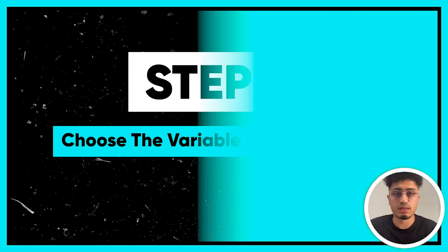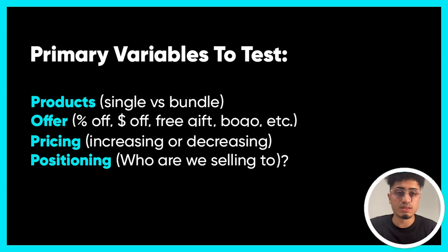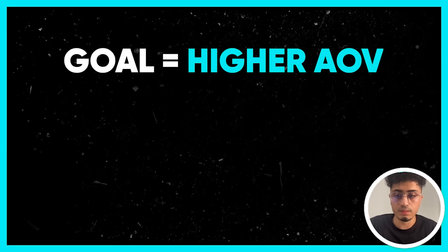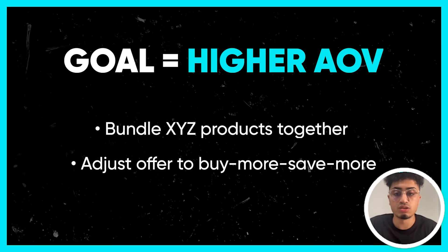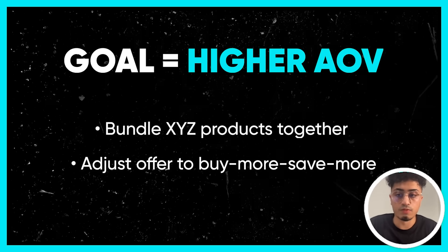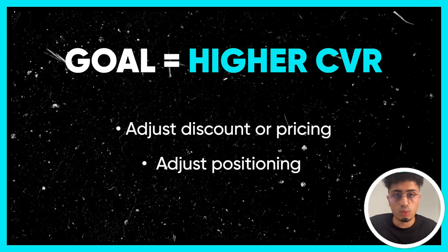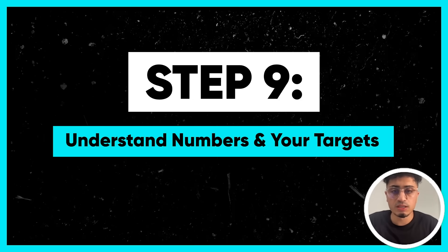Step eight: choose the variable you plan to test. Far too often clients are testing all over the place — mostly secondary variables. Focus on primary variables: product single versus bundle, offer percentage-based versus dollar-based, free gift, BOGO, pricing increases or decreases, and positioning — who are you selling to? Moms, dads, teenagers? Get into their psychographic characteristics. If your goal is higher AOV, bundle best-selling products. If your goal is a higher conversion rate, adjust your discount, pricing, or positioning.